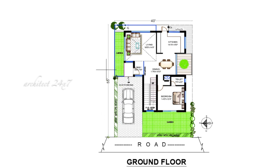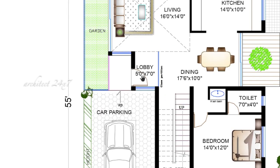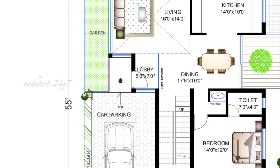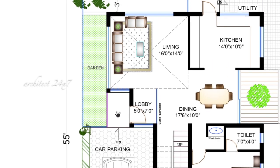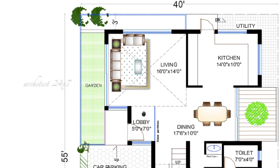This is the car parking. This is the main door and this main door is facing towards the north. And according to Vastu, the main door should be placed towards the north or the east direction. So here in this house, we have placed it towards the north direction, and the lobby here is of size 5 by 7 feet. And from the lobby, we are entering to the living room.